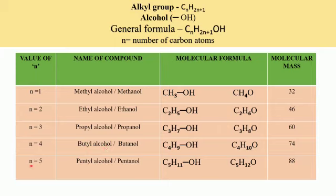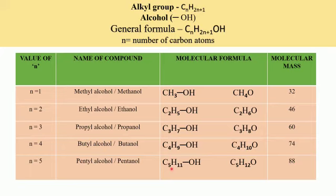For N equal to 5, we get the formula C5H11OH. The alkyl group here is pentyl — there are 5 carbon atoms — so it is a derivative of pentane. It has one hydrogen less compared to the corresponding alkane pentane, and that hydrogen has been substituted by the functional group OH. The IUPAC name is pentanol, and the common name is pentyl alcohol. We can also write it as C5H12O.